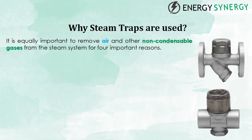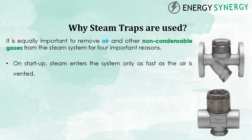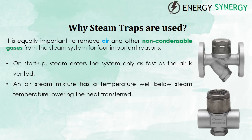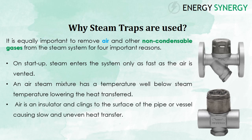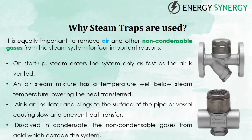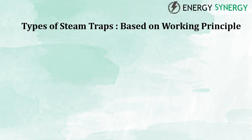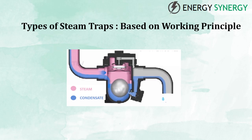It is equally important to remove air and other non-condensable gases from the steam system for four important reasons. Number one: on startup, steam enters the system only as fast as the air is vented. Number two: an air-steam mixture has a temperature well below steam temperature, lowering the heat transferred. Number three: air is an insulator and clings to the surface of the pipe or vessel, causing slow and uneven heat transfer. Number four: dissolved in condensate, non-condensable gases form acid which corrodes the system over time.